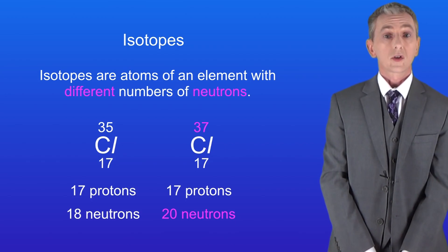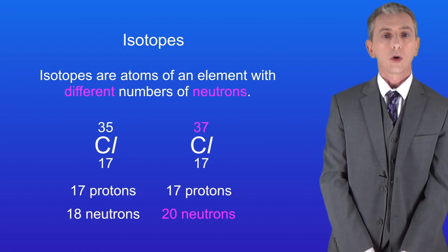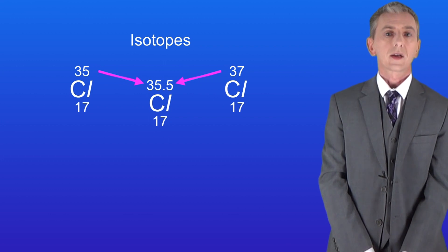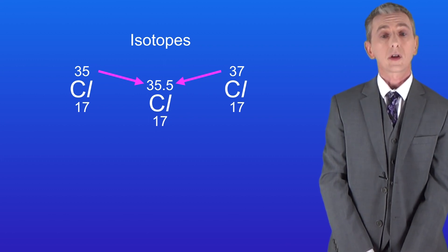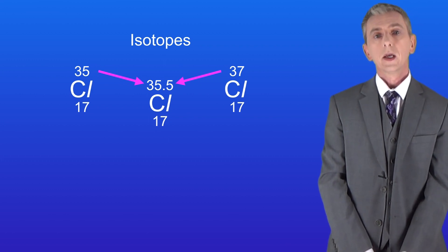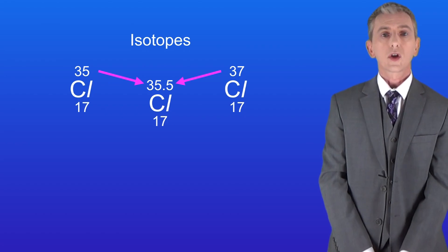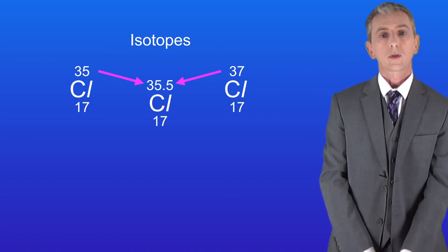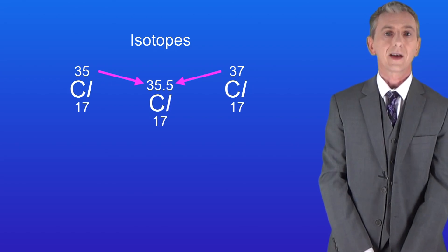Now there's a problem here which is which mass number do we use for chlorine on the periodic table. Looking on the periodic table we can see that the mass number for chlorine is actually 35.5. So the question is how do we get 35.5 from two isotopes with mass numbers of 35 and 37?